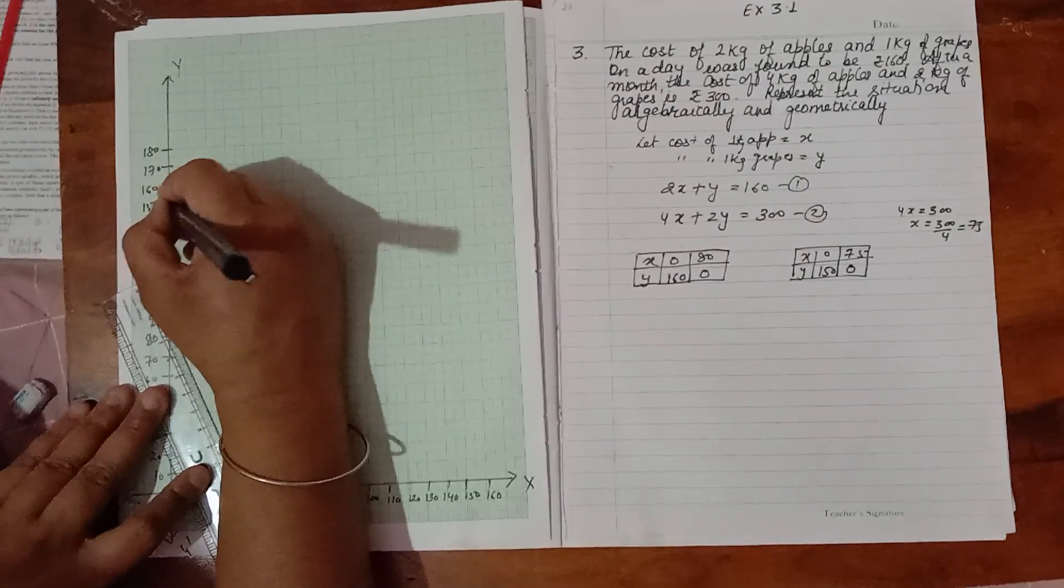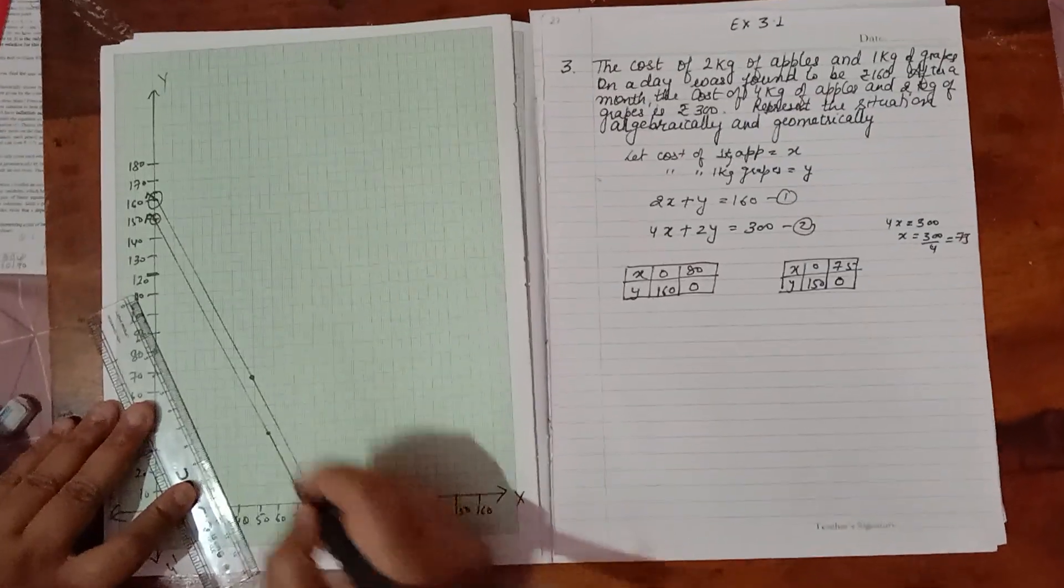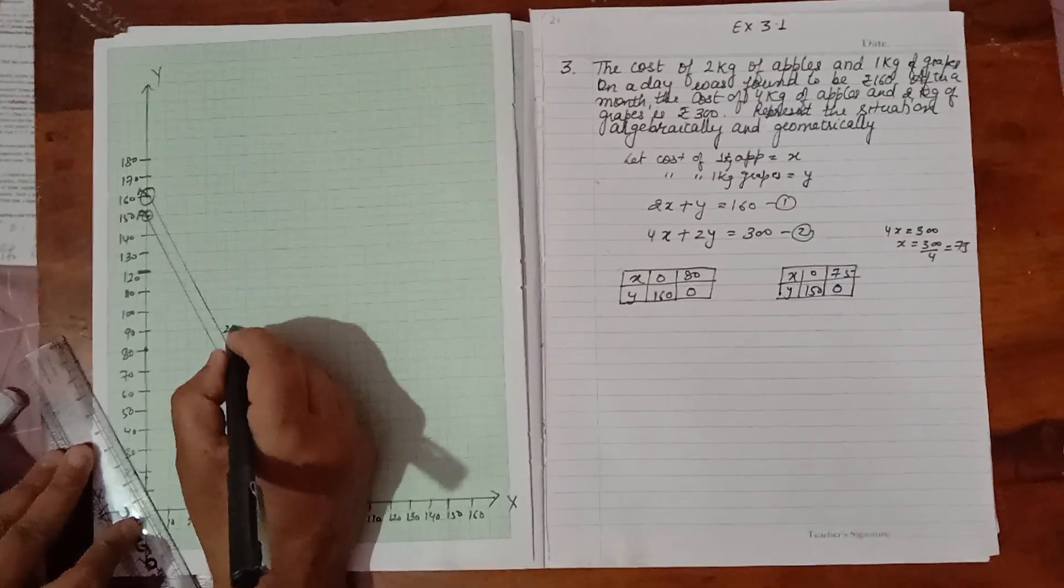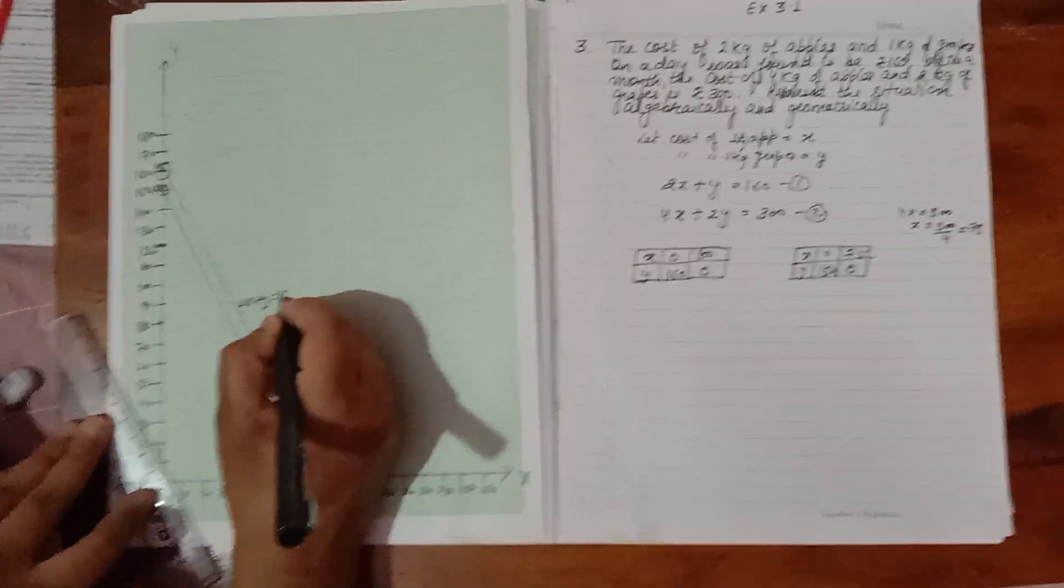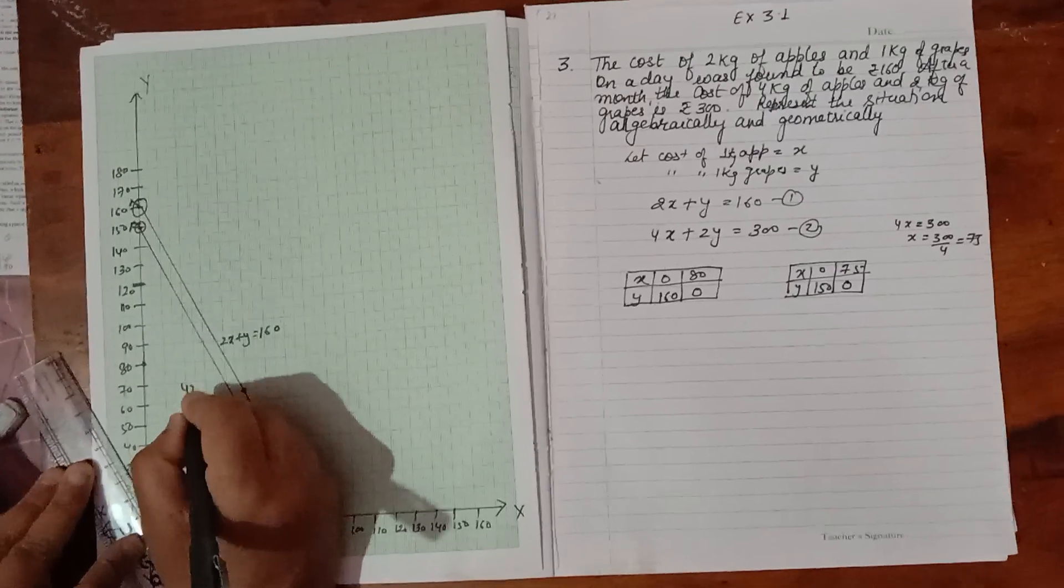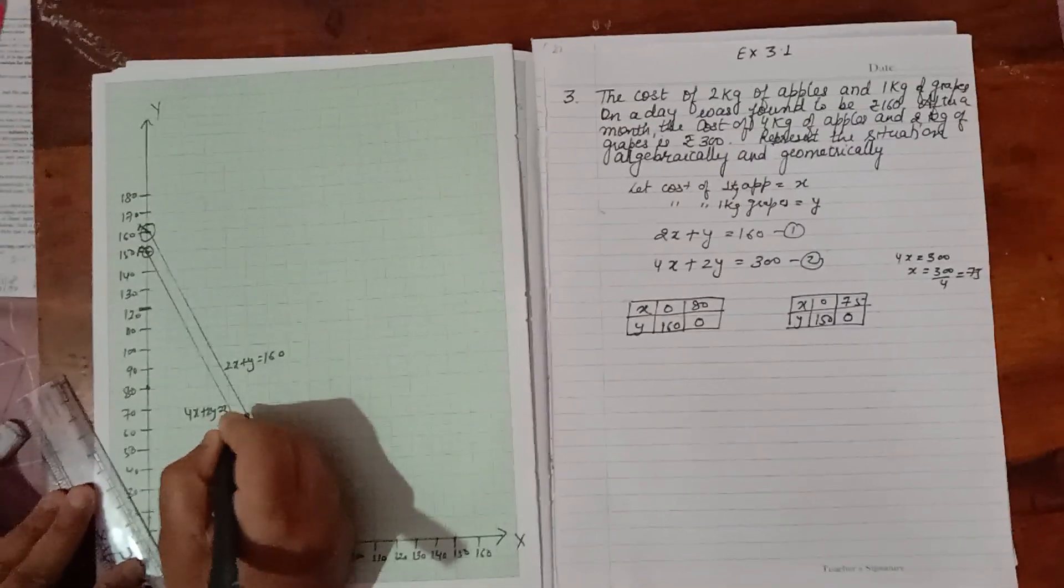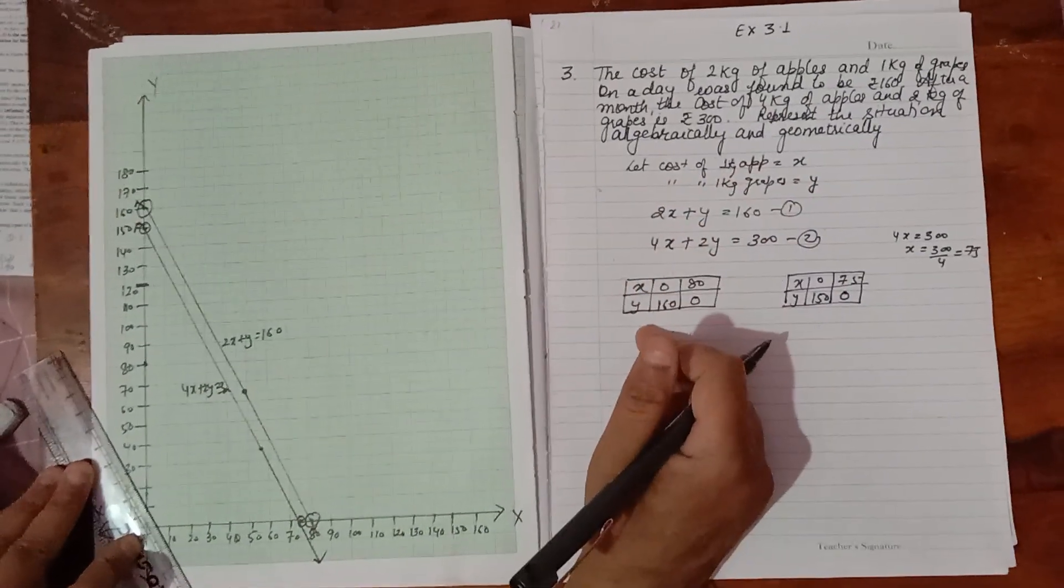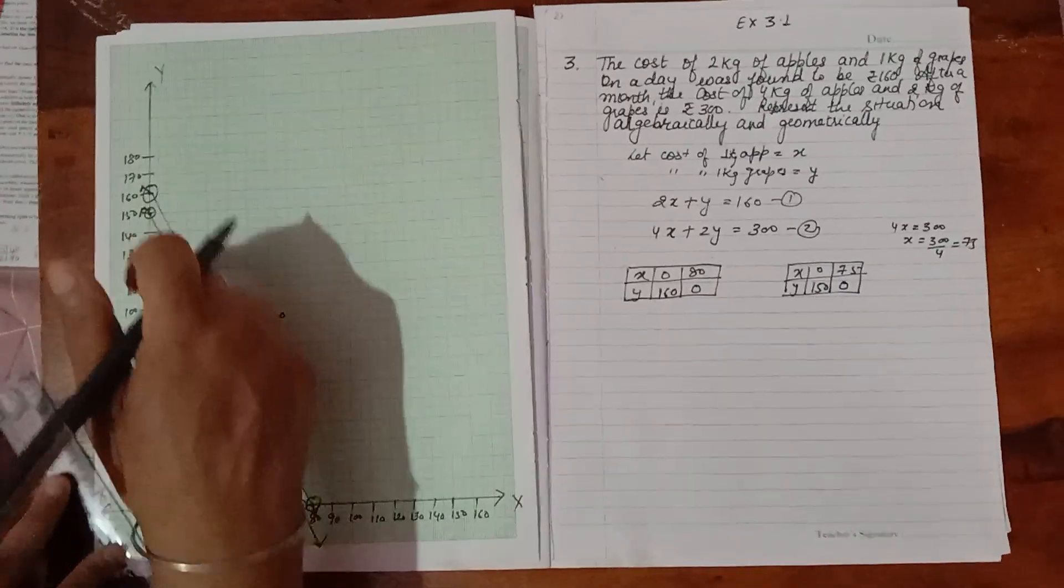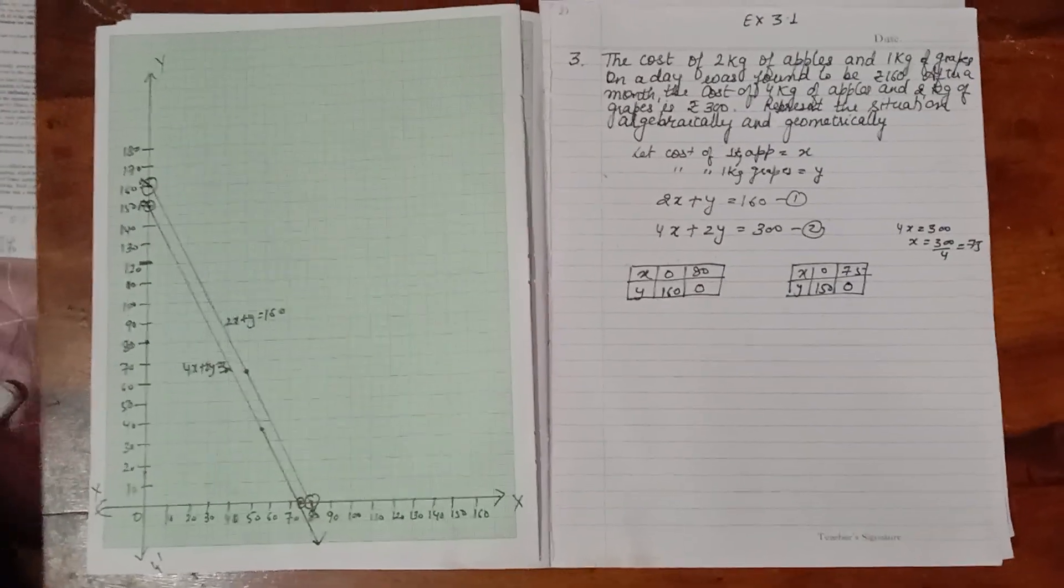These are the graph forms. You can write the equations here. 2X plus Y equals 160. Here 4X plus 2Y equals 300. This is the algebraic solution and this is the graphical solution. Thank you.